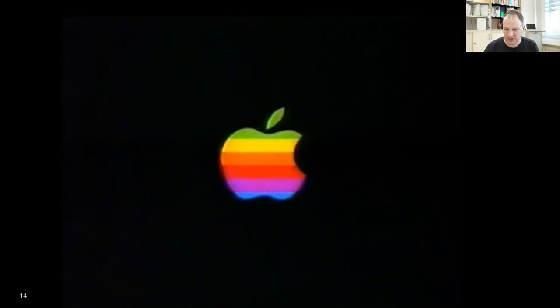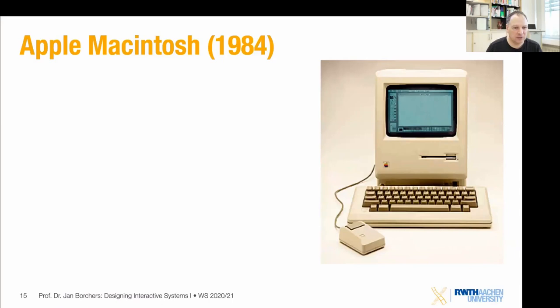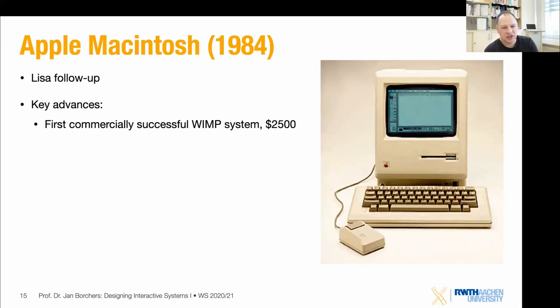The Mac was introduced a year after the Lisa. A lot of things were kept the same — the one-button mouse, which Apple held onto for a very long time — but it was a significantly shrunk, much cheaper box. Its key advance was redoing the Lisa's ideas in a product affordable enough to be commercially feasible. This was the first commercially successful system with a graphical user interface, starting the era of GUIs, mice, menus, and pointers making their way into everybody's home.